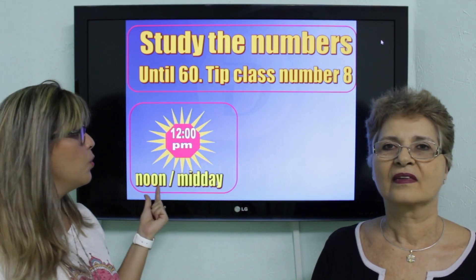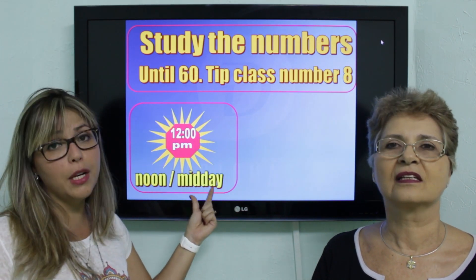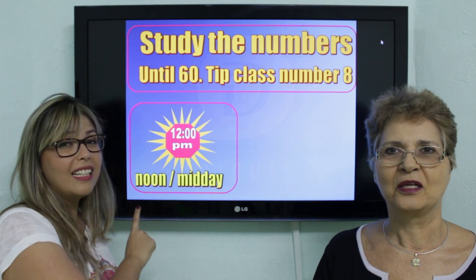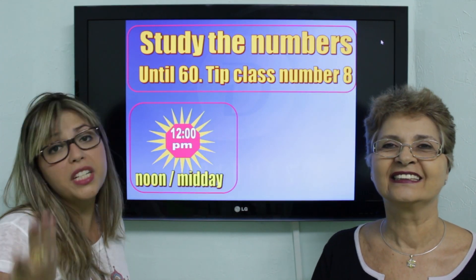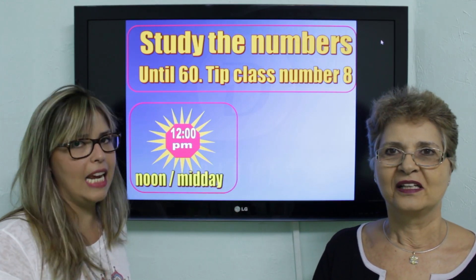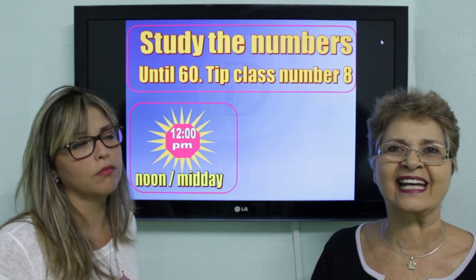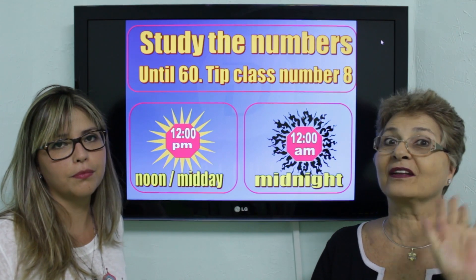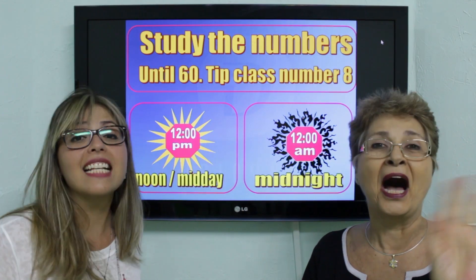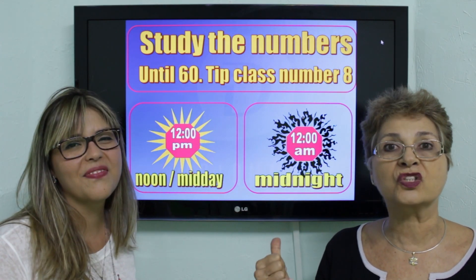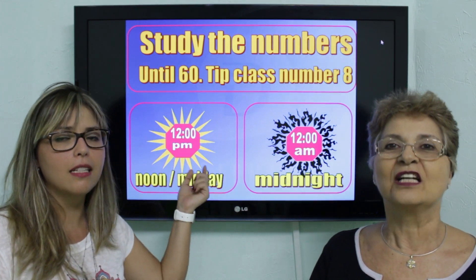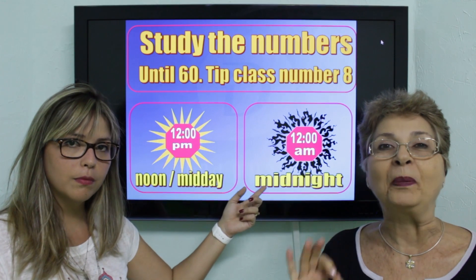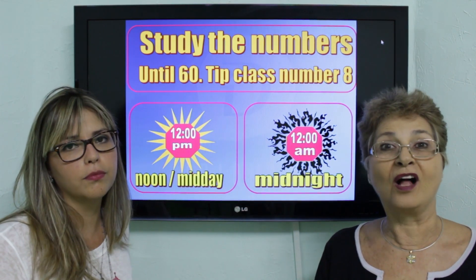Nós temos o 12pm, que vai ser noon nos Estados Unidos e midday in Europe. 12pm significa meio-dia. In American English: noon. No inglês britânico, no inglês da Europa, é midday. E para a meia-noite, nós usamos 12am, que vai ser midnight. So everybody: noon, midday, 12pm — and 12am, midnight.